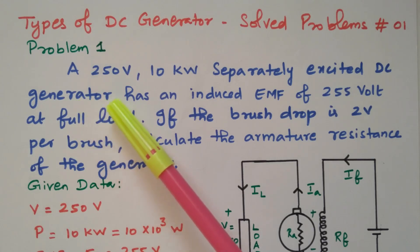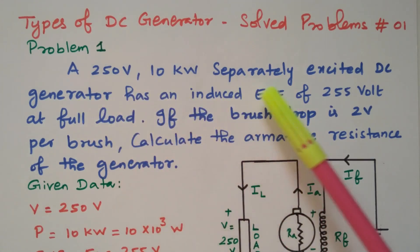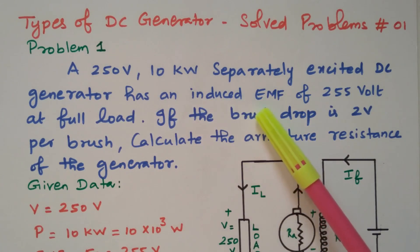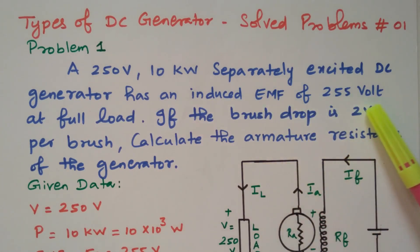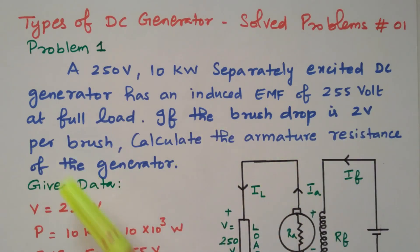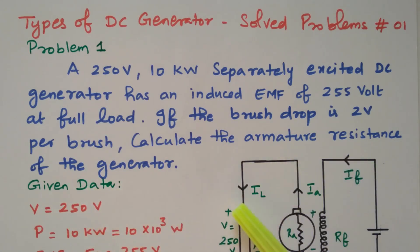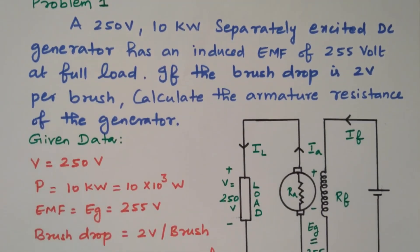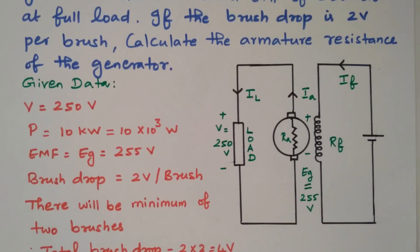A 250 volt, 100 kilowatt separately excited DC generator has an induced EMF of 255 volts at full load. If the brush drop is 2 volts per brush, calculate the armature resistance of the generator. We need to find the armature resistance of the generator.